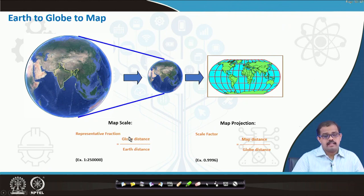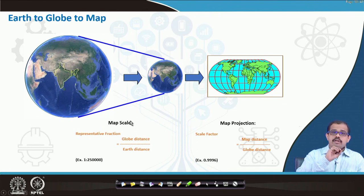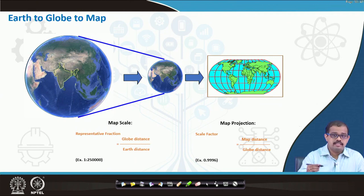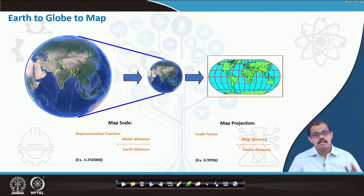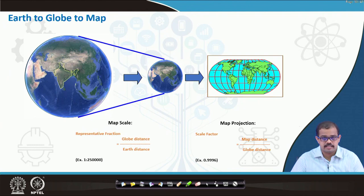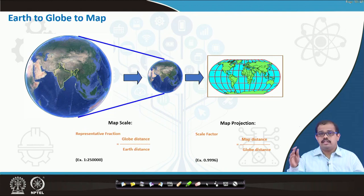The first thing that people have to understand is the map scale and map projection. When I say map scale, it is globe distance by earth distance — for example, 1 is to 250,000 units. But when we look at map projections, this is the scale factor, which is the map distance to the globe distance. The flattened map distance to the globe distance is nothing but your scale factor, and it will be in the form of decimals. This is essentially useful when providing distortion-less maps and determining what kind of scale factor is needed to give you exact distances on the ground.